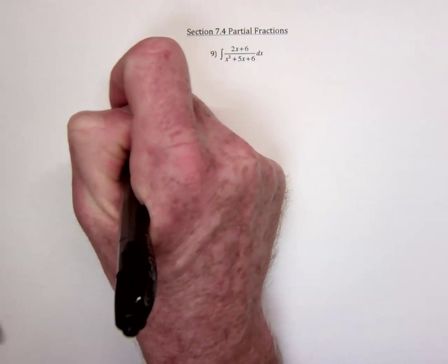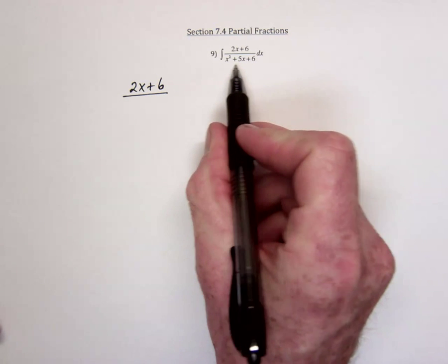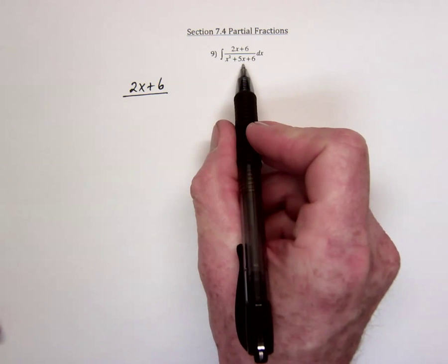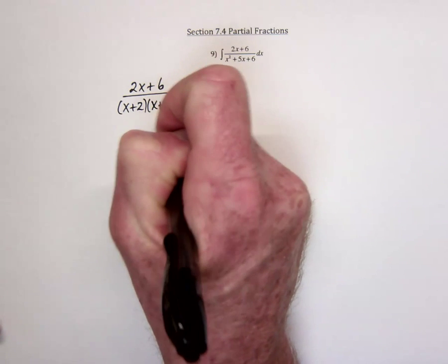Take 2x plus 6. Factor this. It would be an x plus 2 times x plus 3.